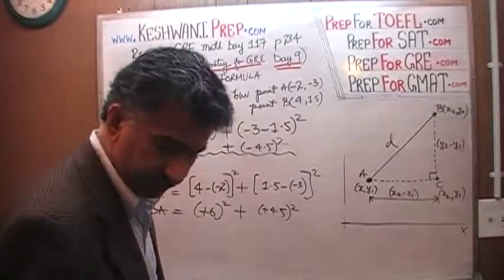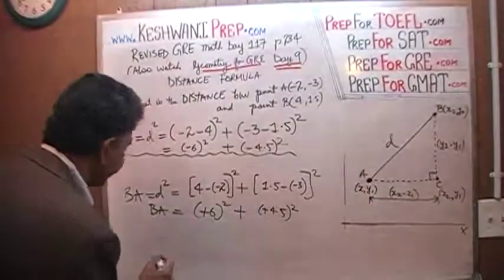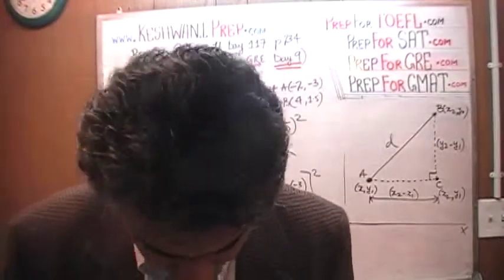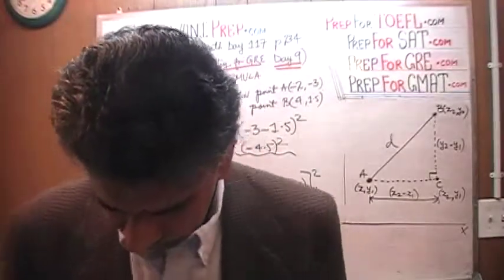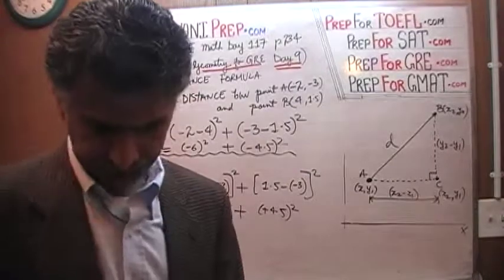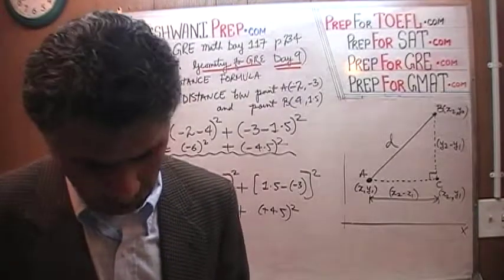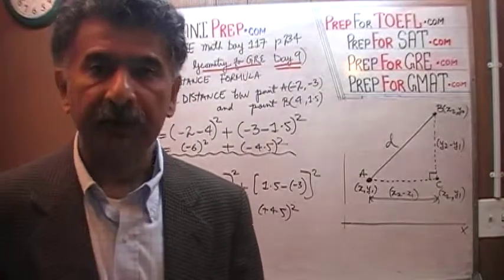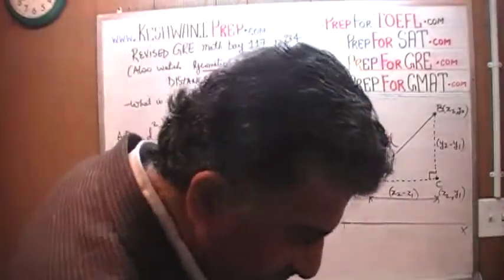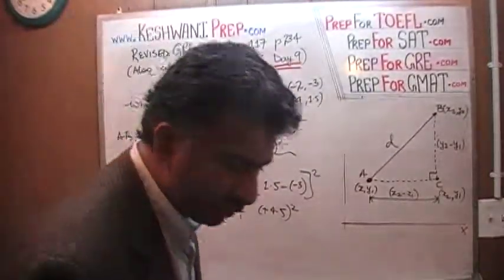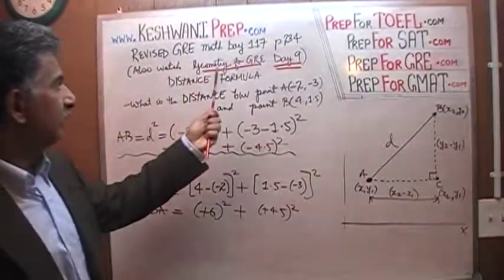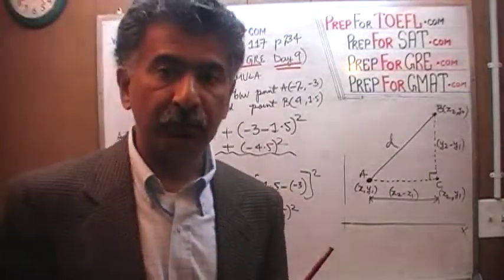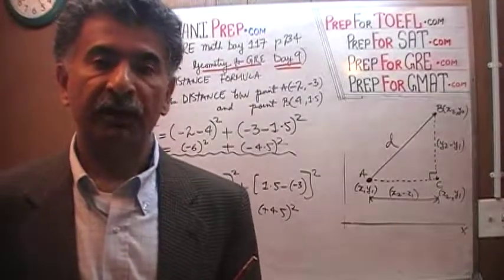We haven't finished the problem yet, but you can finish it yourself — the rest is easy. Just complete it and that's the answer; the rest of the working is in the book. I will see you tomorrow, and tomorrow we'll start a new concept. So we did the distance formula — this is the second time I've covered this topic in detail. If you want to watch the previous video, it's geometry for GRE Day 9.